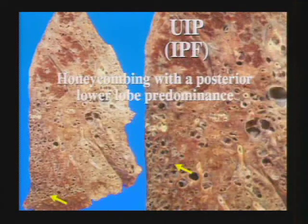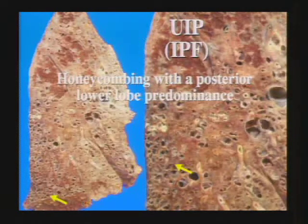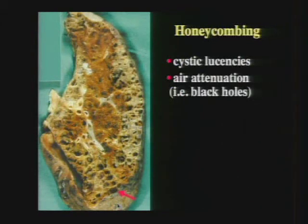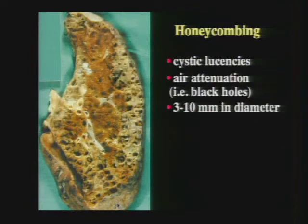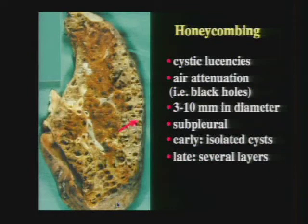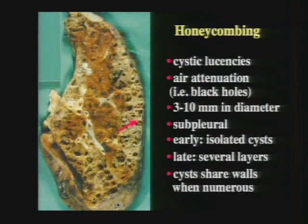This sagittal lung slice in a patient with UIP-IPF shows very nicely the typical posterior subpleural location of honeycombing, with the posterior costophrenic angle most severely involved. Here is the cross-sectional appearance of honeycombing: cystic lucencies, areas of lung destruction containing air seen as black holes on CT. They are typically three to ten millimeters in diameter and must be subpleural. Early on you see only one or two isolated subpleural cysts; later you see multiple layers of cysts beneath the pleural surface, sharing walls when numerous.